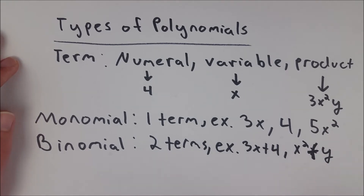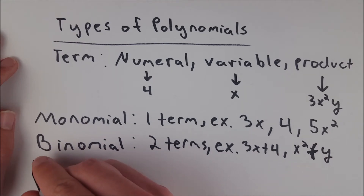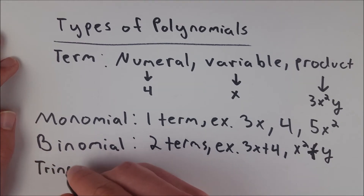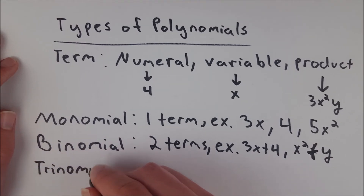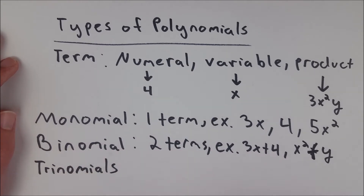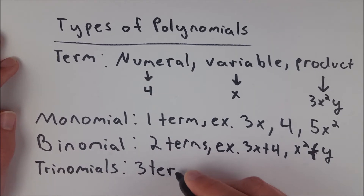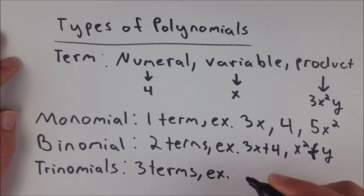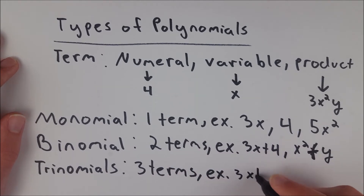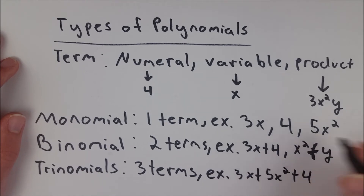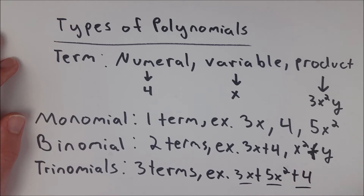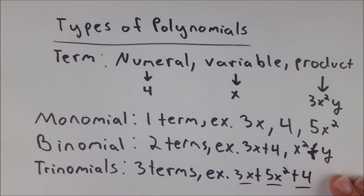That's just a polynomial with two terms as a binomial. Then we have trinomials. Trinomials are the last polynomial that gets a special name for its amount of terms. For three terms, an example would be 3x + 5x² + 4, adding up all of our monomials. We've got 1, 2, 3 terms, and that makes it a trinomial.